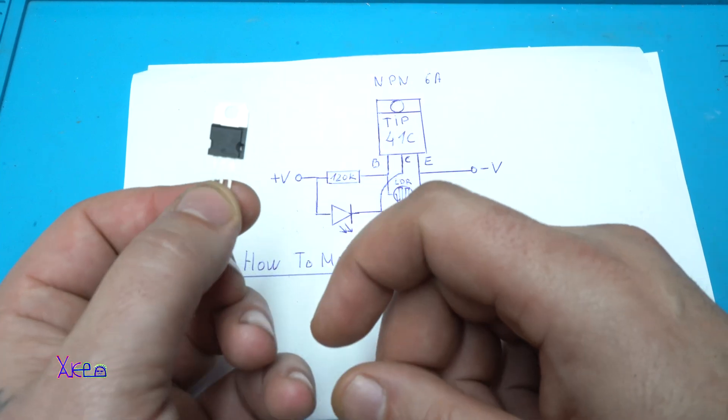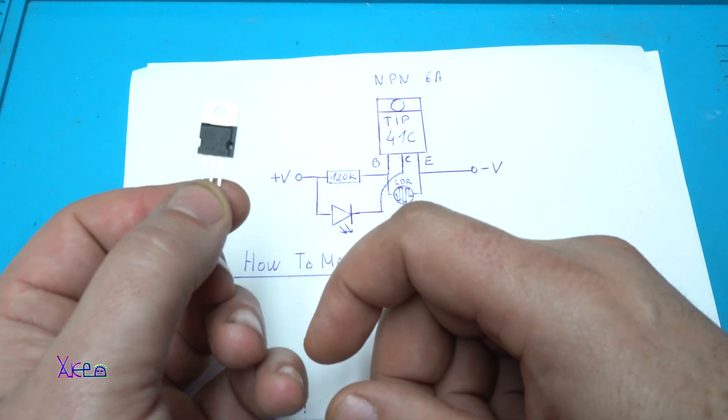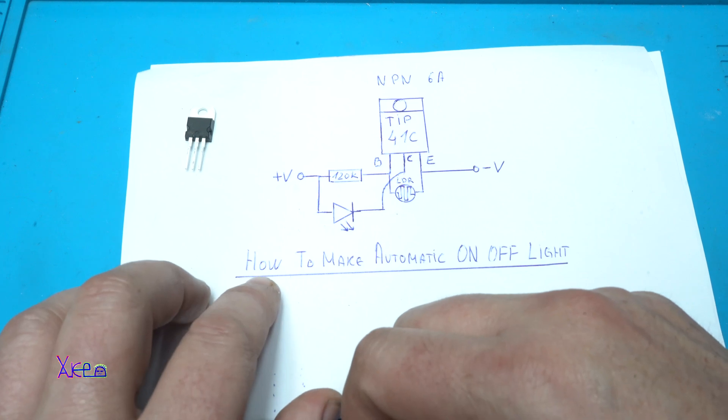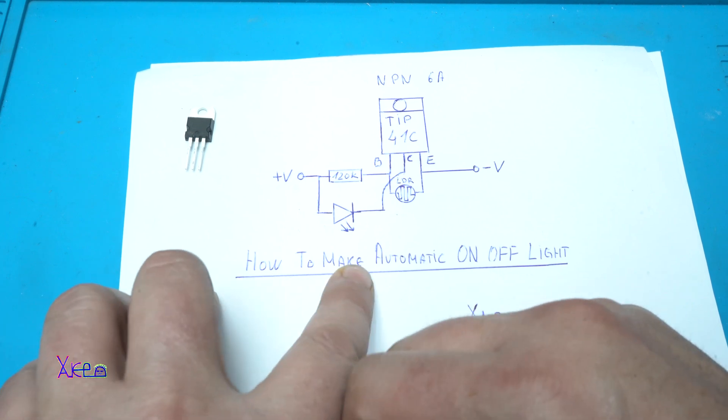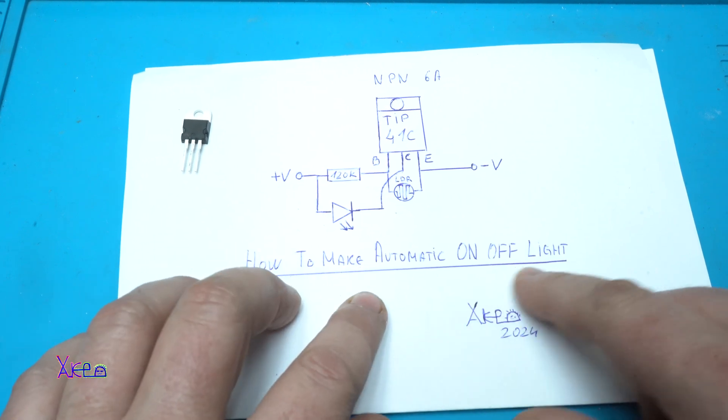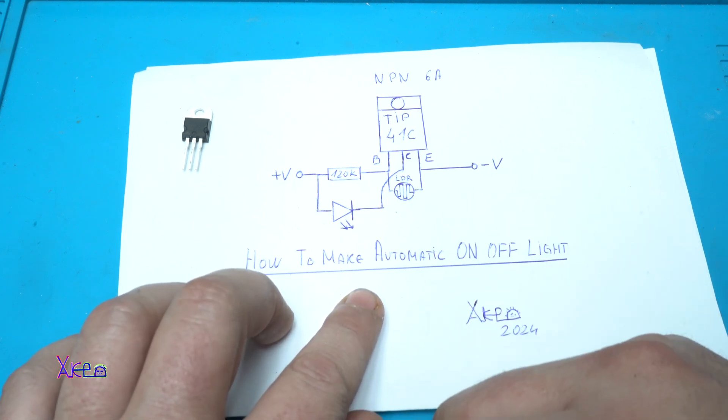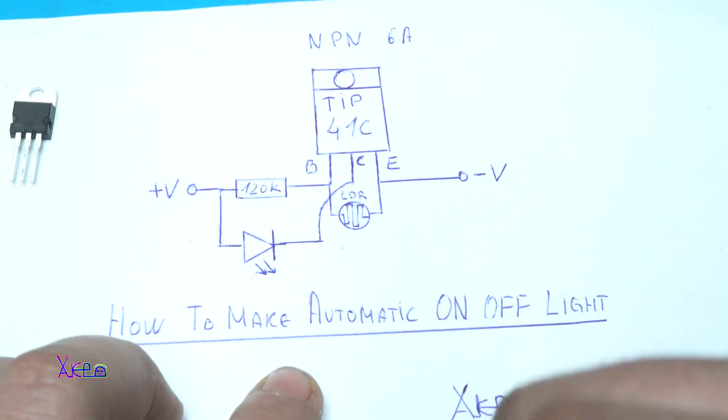As I said, it can handle up to 6 amperes of load. Here is a very simple circuit diagram of how to make an automatic on-off light or use this circuit for your street light. It uses only 3 components.